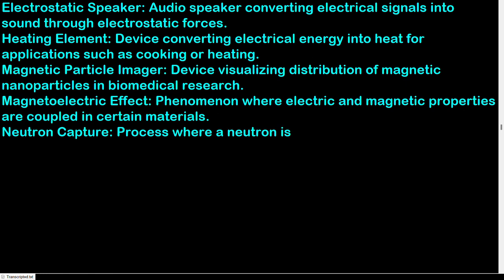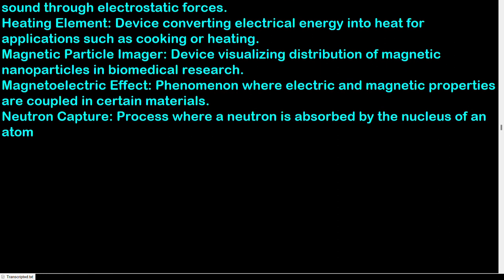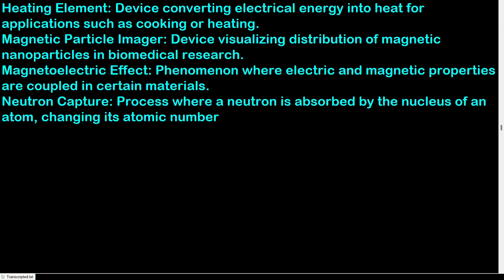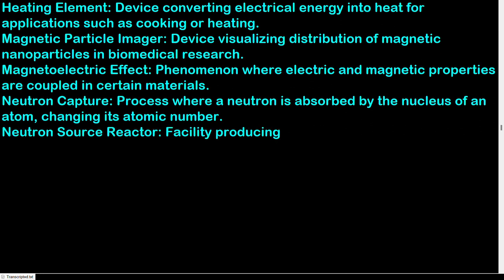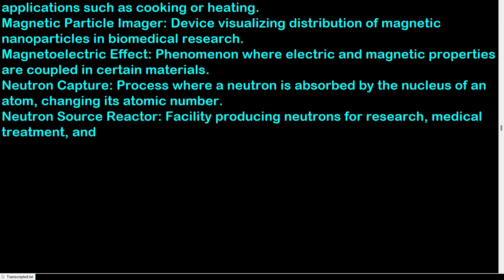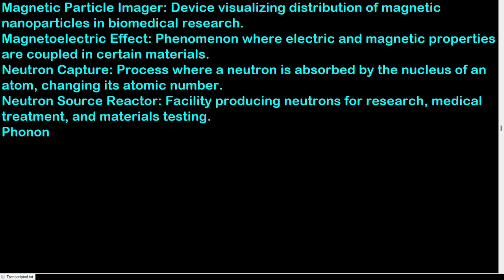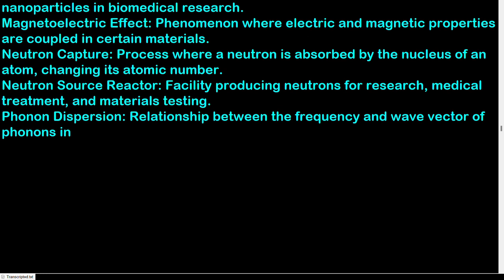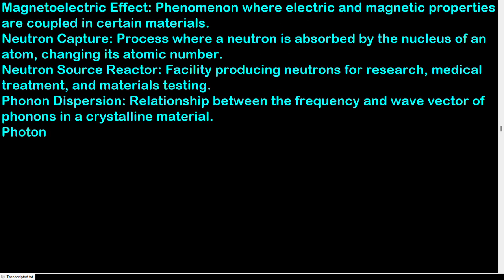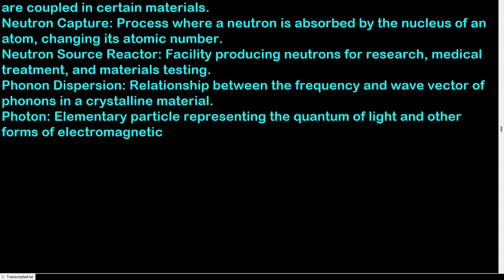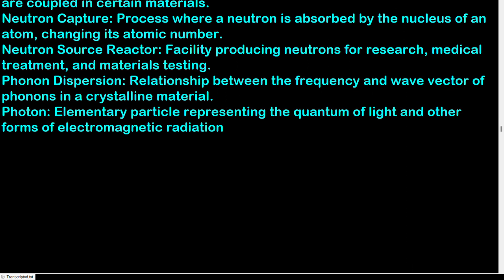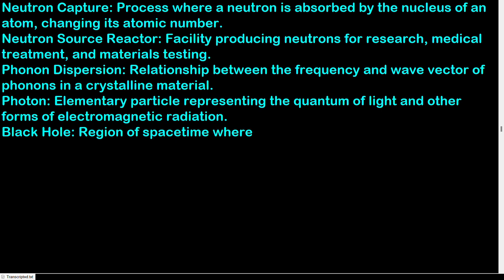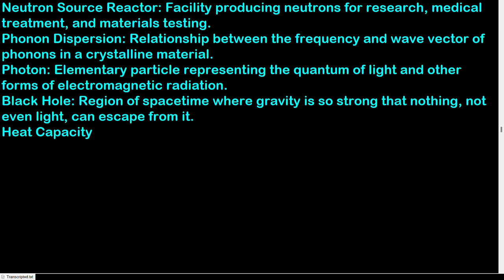Neutron source reactor: facility producing neutrons for research, medical treatment, and materials testing. Phonon dispersion: relationship between the frequency and wave vector of phonons in a crystalline material. Photon: elementary particle representing the quantum of light and other forms of electromagnetic radiation. Black hole: region of spacetime where gravity is so strong that nothing, not even light, can escape from it. Heat capacity: amount of heat energy required to raise the temperature of a substance by one degree Celsius.